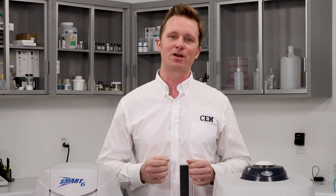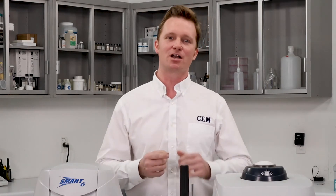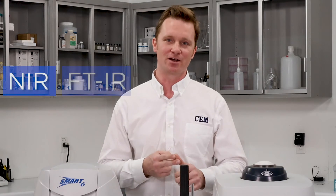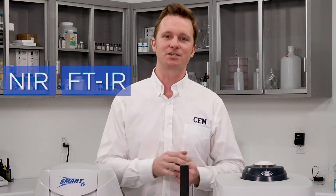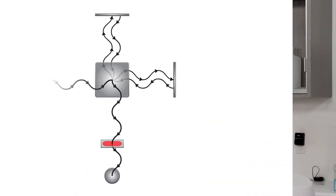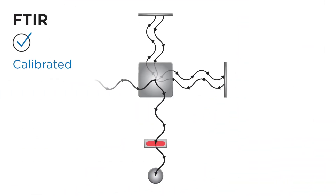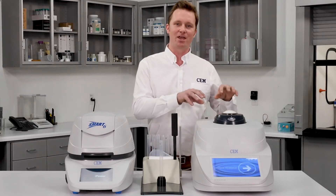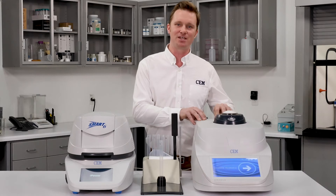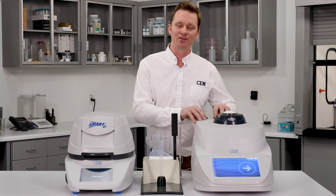Now let's take a broader look at how the Oracle compares to other rapid fat analyzers on the market — specifically NIR and FTIR. These are both spectroscopic methods that take an optical signal and through chemometrics generate a fat result. The issue is they have a complex optical train that requires constant recalibration to maintain accuracy, whereas the Oracle has no moving parts and maintains reference-level accuracy day in and day out.